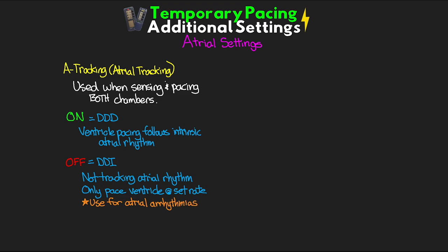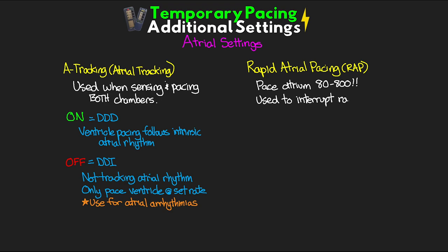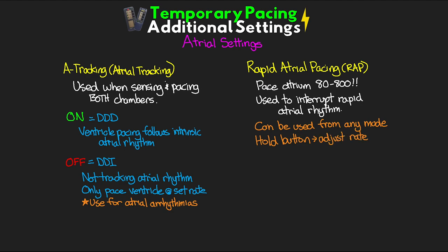The other atrial setting is rapid atrial pacing, or RAP, which allows us to pace the atrium at rates anywhere from 80 all the way up to 800 beats per minute. We use this to interrupt a rapid atrial rhythm the patient may have. This can be initiated from any mode the pacer is currently operating in, but you have to hold the button the entire time you want to deliver it — and while holding you can still adjust the rate. The absolutely imperative thing when running rapid atrial pacing is to ensure the atrial leads are connected to the atrium on the pacemaker and not the ventricle, because pacing the ventricle at 400 or 500 beats per minute would not be good.